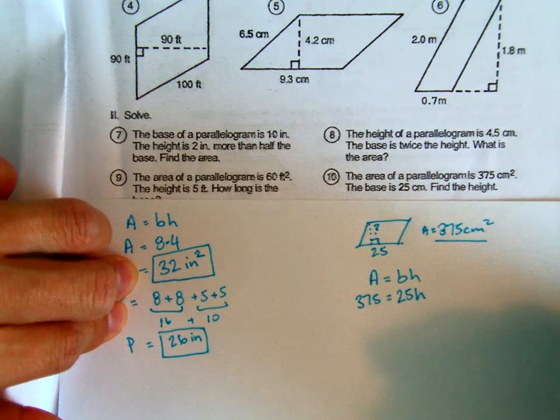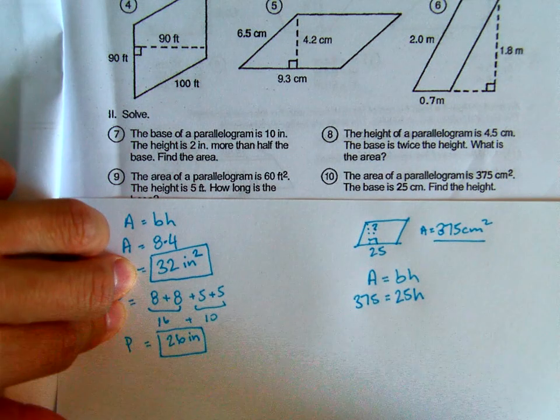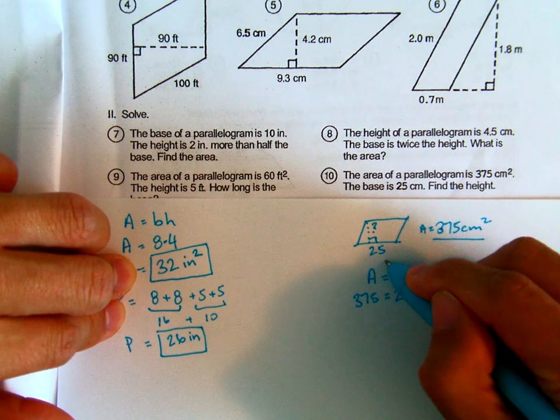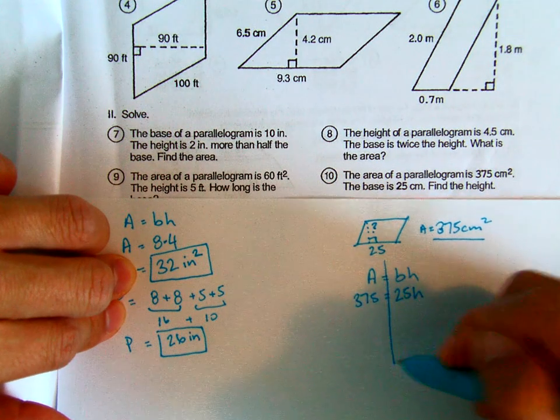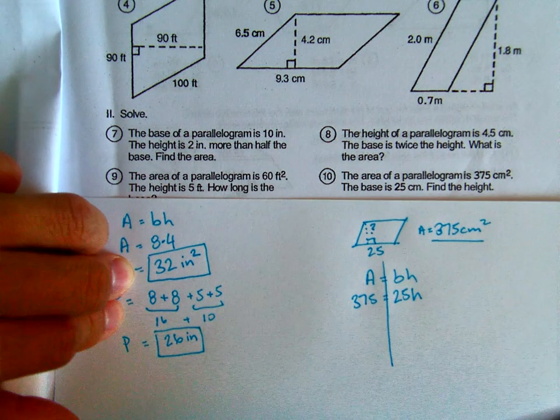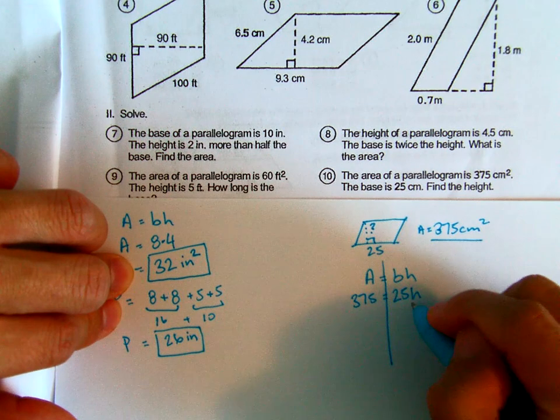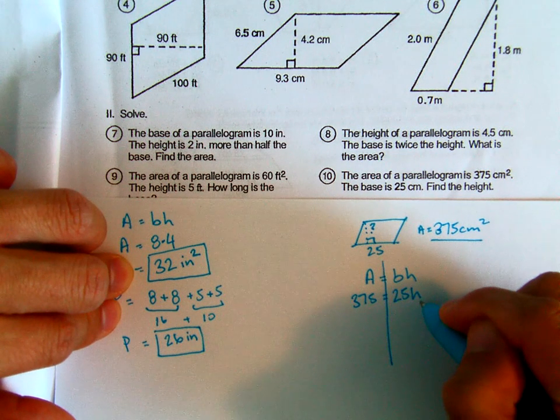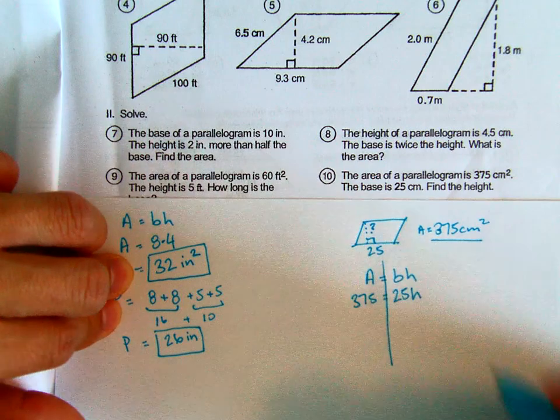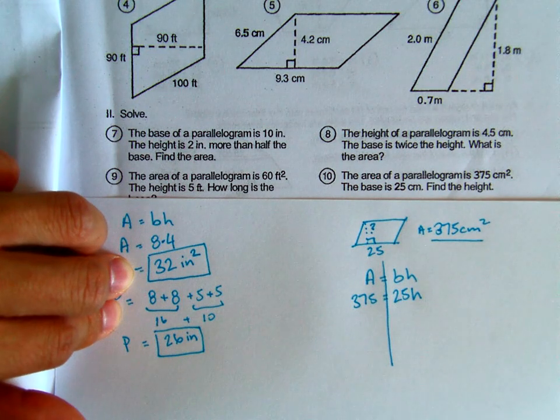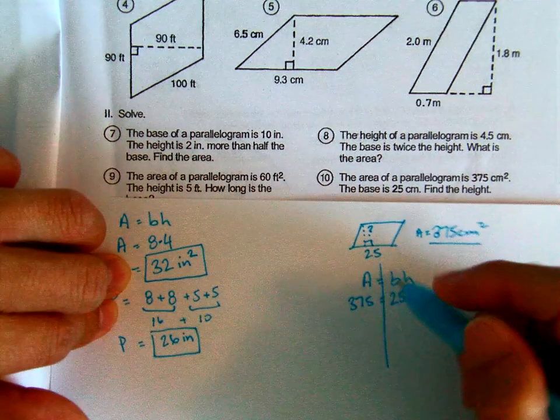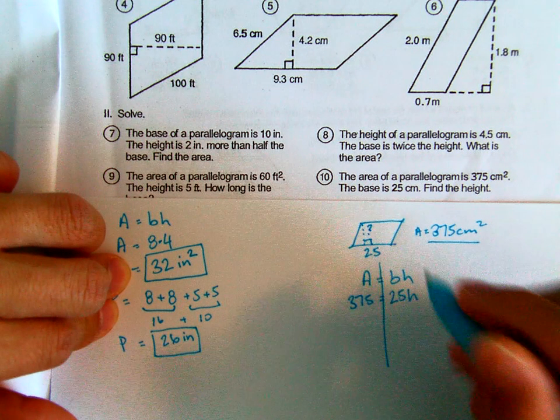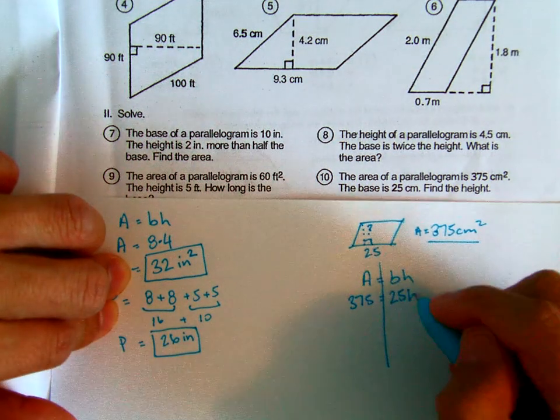So now I have an equation that says 375 equals 25H. If I draw my little line down here, because it's kind of like an equation, or it is an equation. How do I get H by itself? 25 times what equals 375? Some of you can probably figure this out in your heads. But others of you might have recognized that if 25 is being multiplied by H, I can do the inverse operation. I can do the opposite of multiplying by 25.